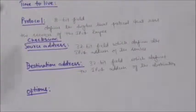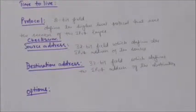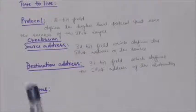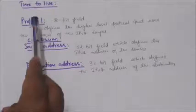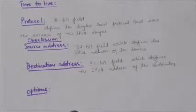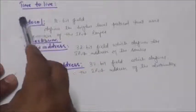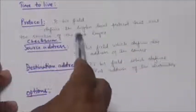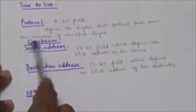The next field is Protocol — an 8-bit field that defines the higher-level protocol using the services of the IPv4 layer. An IPv4 datagram can encapsulate data from several higher-level protocols such as TCP, UDP, ICMP, and IGMP. This field specifies the final destination protocol to which the IPv4 datagram is delivered.